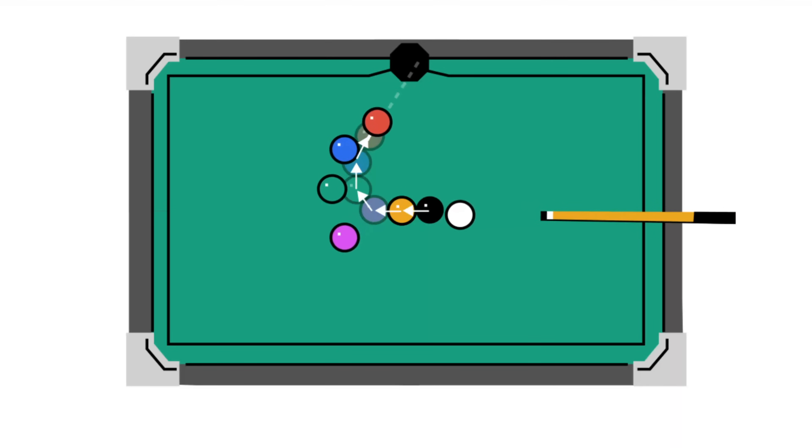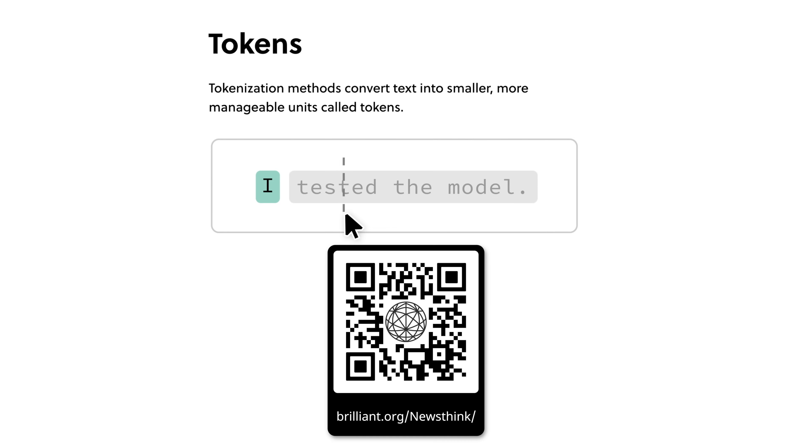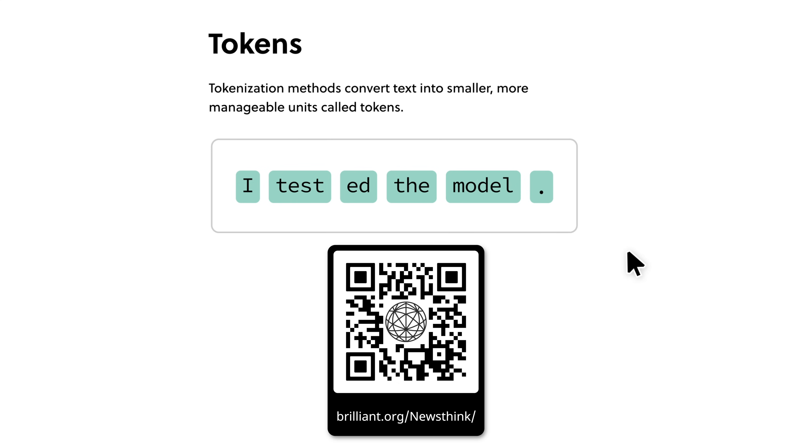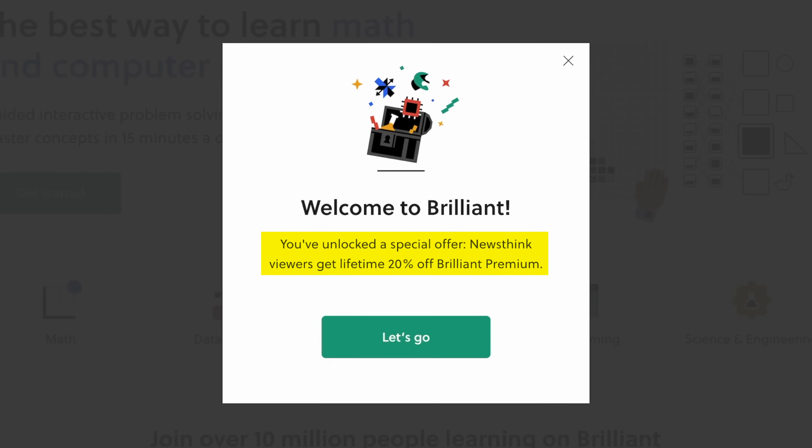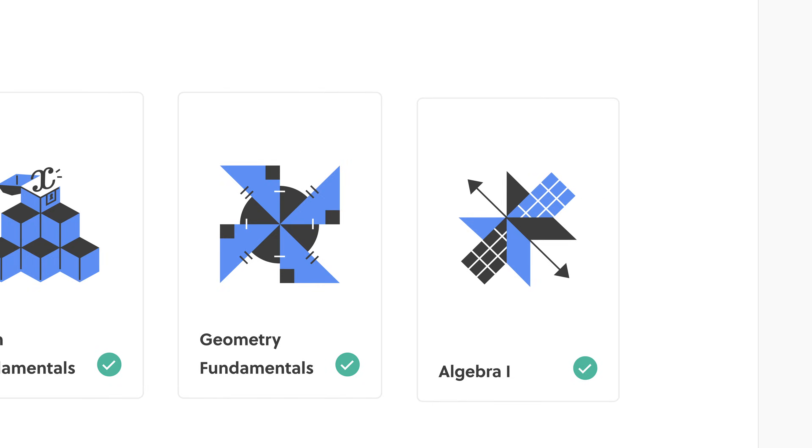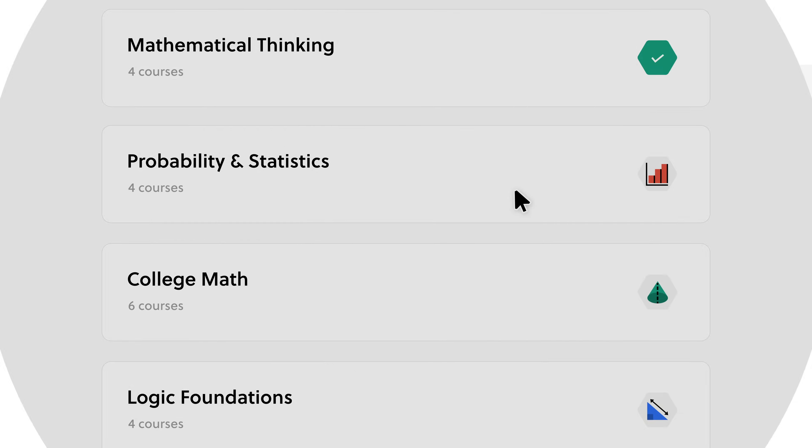Brilliant is free for you to try out for 30 days. Just scan my custom QR code on your screen. My link is also in the description, brilliant.org slash newsthink. If you're one of the first 200 people to sign up with my custom link, you'll get a 20% discount on Brilliant's annual premium subscription, which gives you access to all of their offerings.